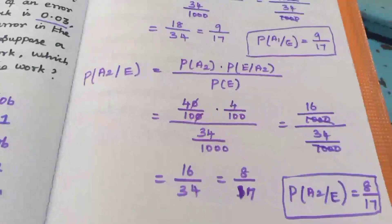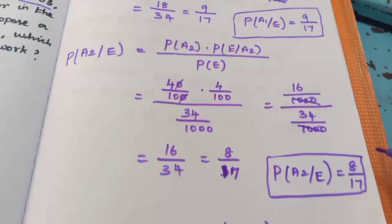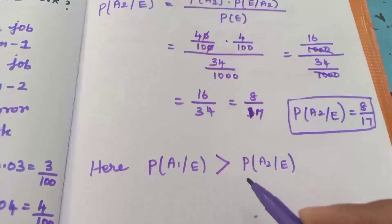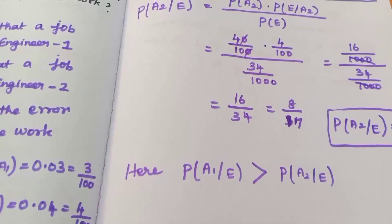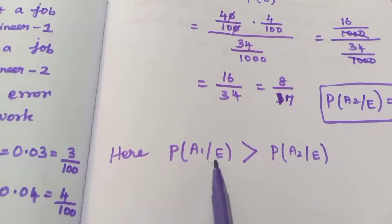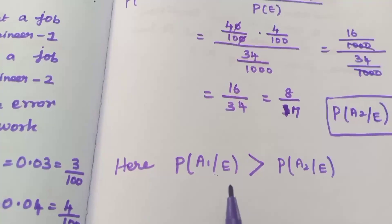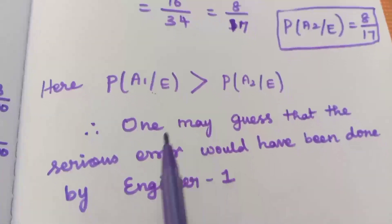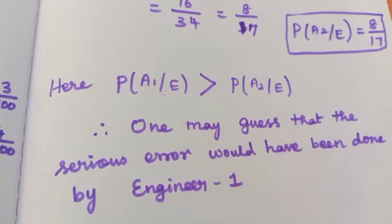Now we compare the probabilities. P(A1|E) is 9/17 and P(A2|E) is 8/17. Since P(A1|E) is greater than P(A2|E), one may guess that the serious error would have been done by engineer 1. So we conclude that the serious error was most likely made by engineer 1. Thank you.